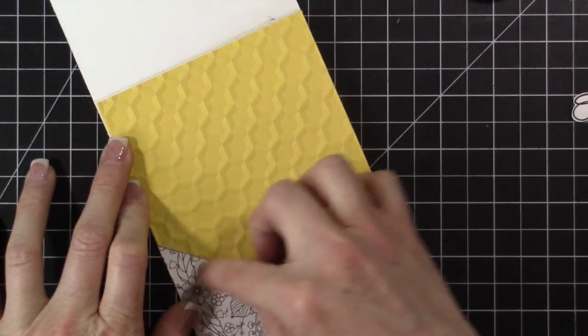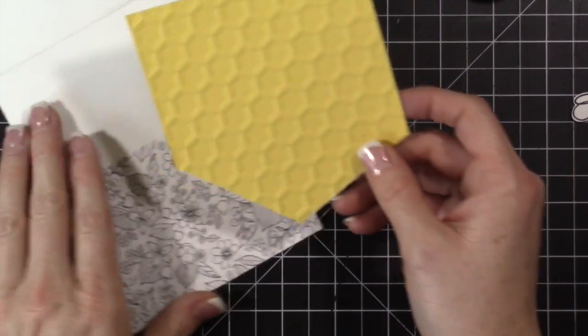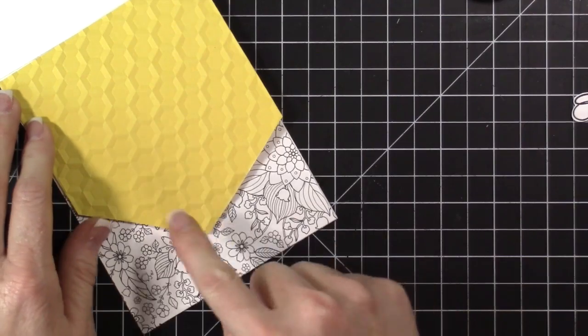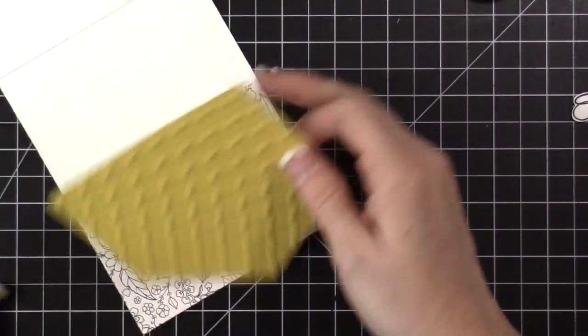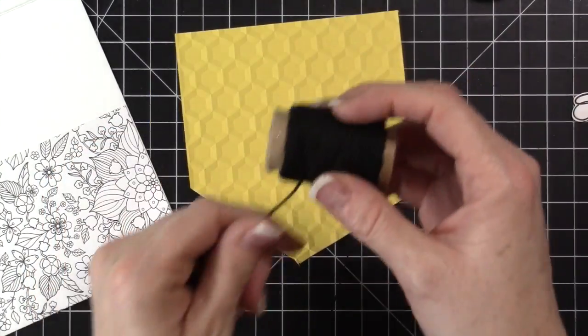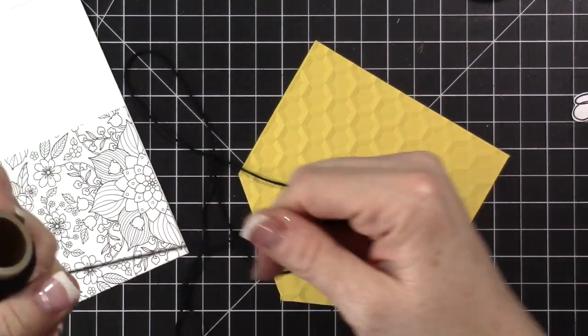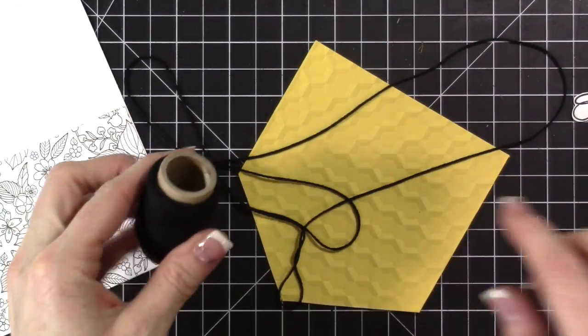The one that I saw particularly with this design had a window sheet down here which would be cute as well. So we're going to do a few things with this because then we're going to pop it up. The first thing we're going to do is take some basic black baker's twine and we're going to tie a bow on this.